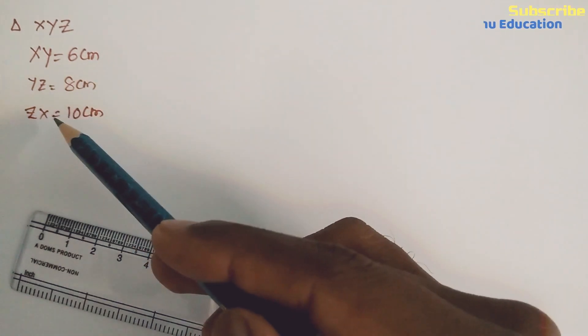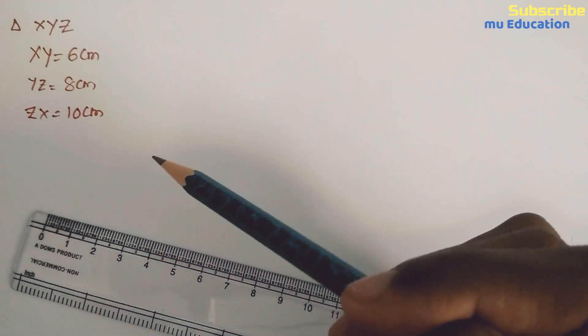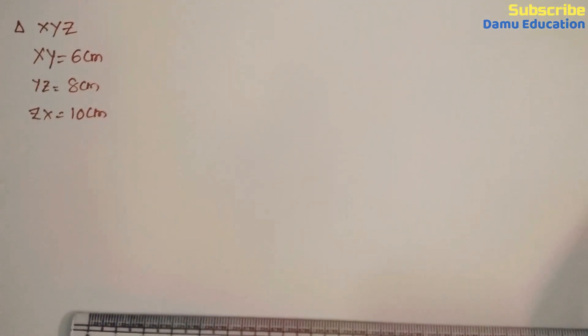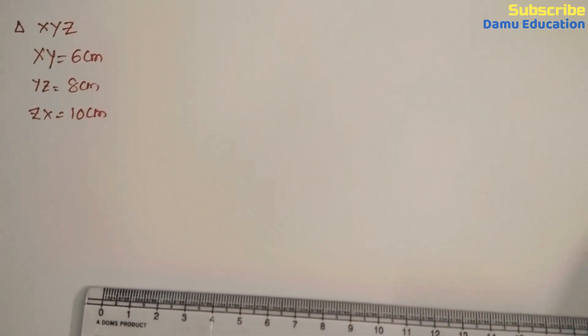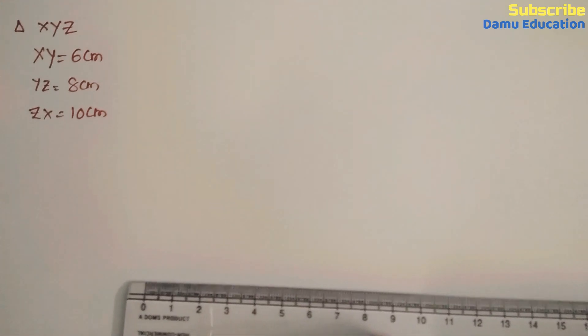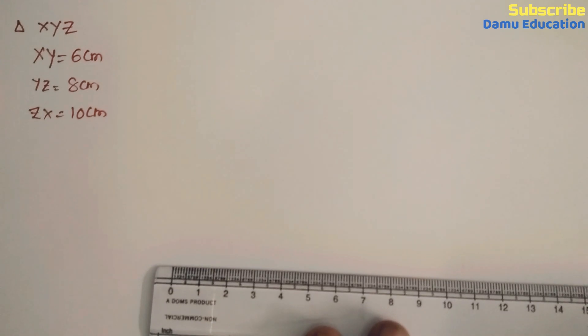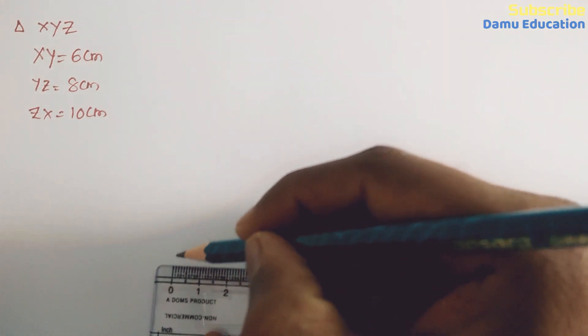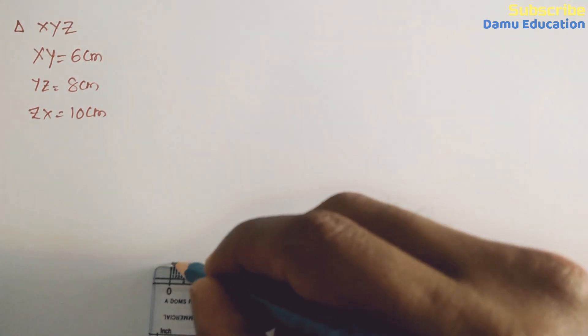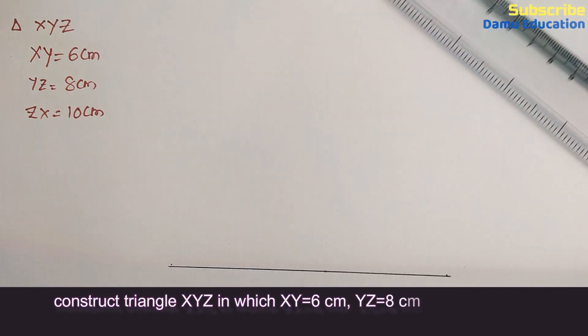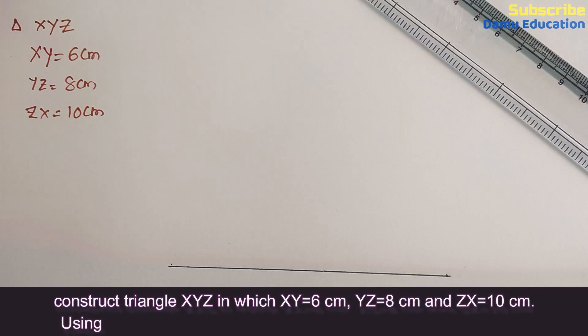Draw a line segment—first step is draw a line segment with 10 centimeters. From here, 0 to 10 centimeters, just draw a 10 centimeter line like this. That is ZX.